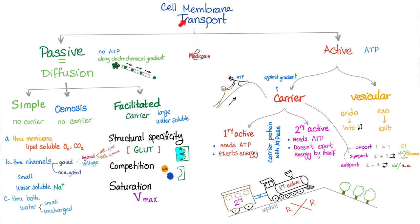Cell membrane transport is divided into passive and active. Passive means no energy needed — no ATP required. Active transport does require energy or ATP. Passive transport happens along the electrochemical gradient from high concentration to low concentration. Active is the opposite — against the gradient from low to high. Passive transport is also known as diffusion. Types include simple diffusion, osmosis (which is simple diffusion for water), and facilitated diffusion, which requires a carrier protein. Simple diffusion: no carrier. Osmosis: no carrier. Facilitated diffusion: requires a carrier.